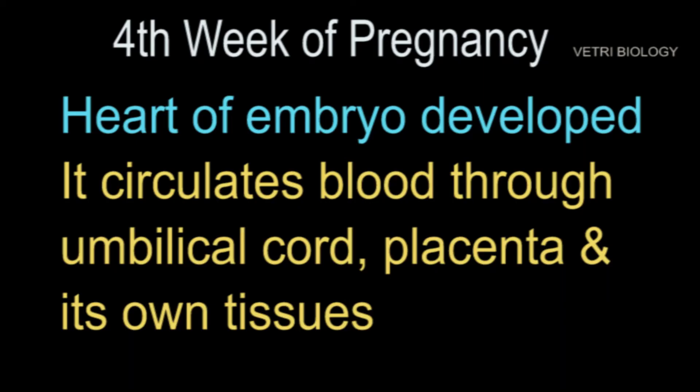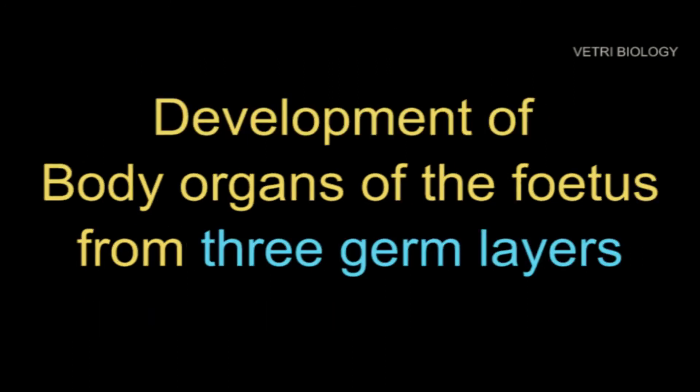During the fourth week of pregnancy, the heart of the embryo develops. It circulates blood through the umbilical cord, placenta, and through its own tissues. The primary germ layers of the fetus serve as the primitive tissues, and from these germ layers all body organs of the fetus develop.